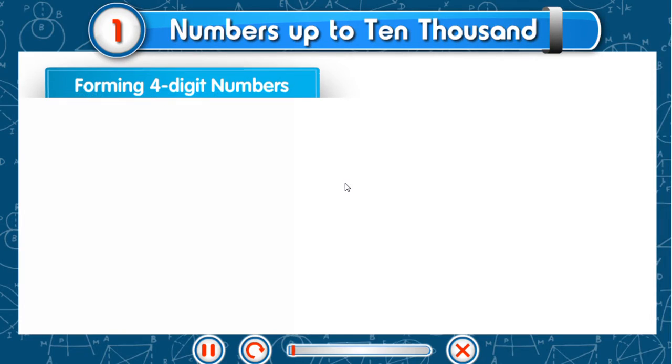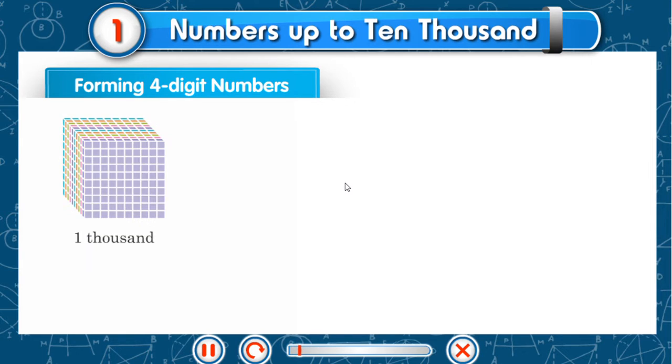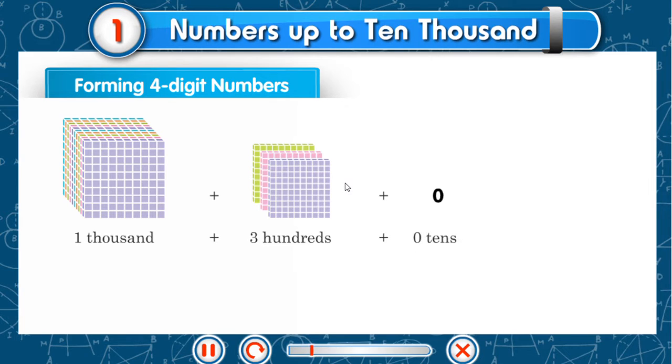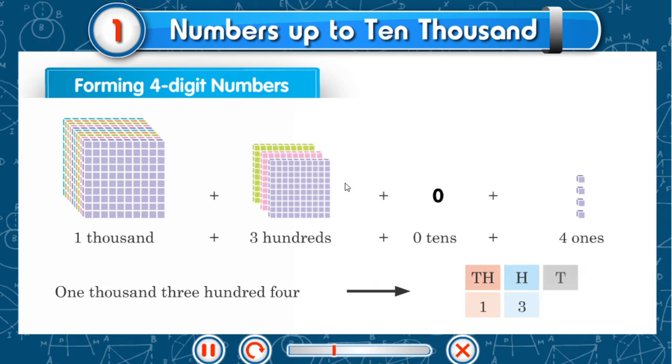Forming 4-digit numbers. 1,000 plus 3 hundreds plus 0 tens plus 4 ones: 1,304. Th 1, H 3, T 0, O 4.